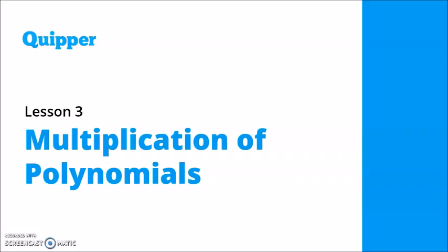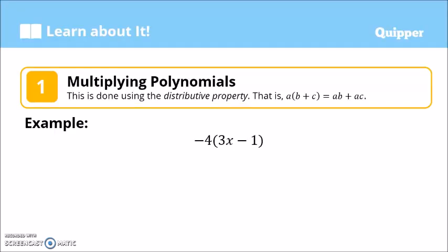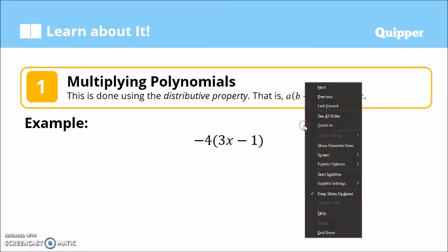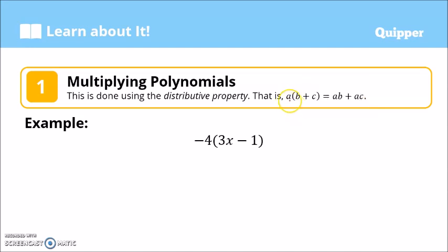This video is about multiplication of polynomials. Multiplying polynomials is done using the distributive property. If you remember, the distributive property states that a times (b plus c) equals a times b plus a times c, meaning we distribute a to both b and c.